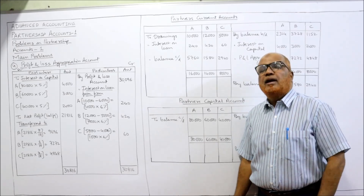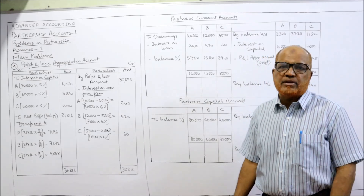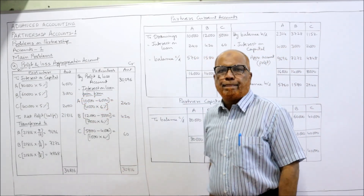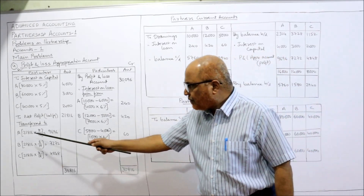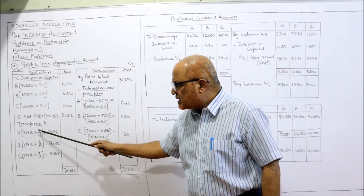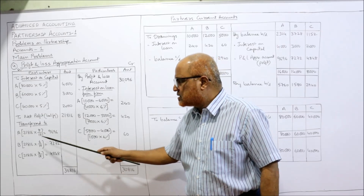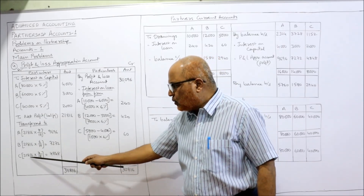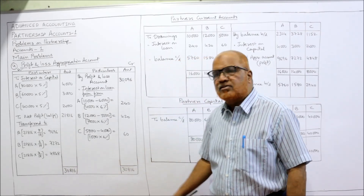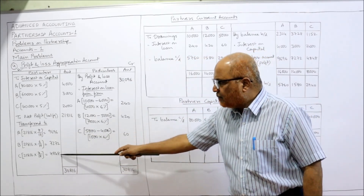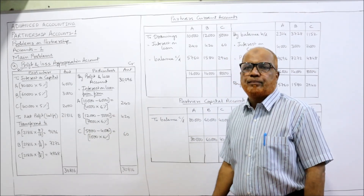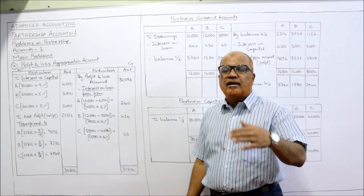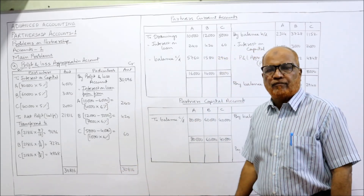The distributable profit of 21,816 is shared in the profit sharing ratio 8:6:4. A's share = 21,816 × 8/18 = 9,696. B's share = 21,816 × 6/18 = 7,272. C's share = 21,816 × 4/18 = 4,848. Adding these three gives 21,816. So in this account we have calculated interest on capital, interest on loan, and share of profit.